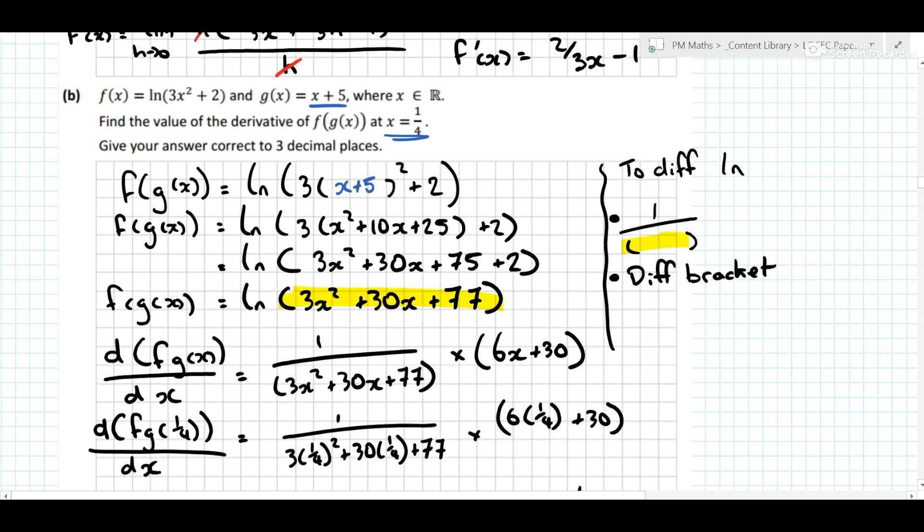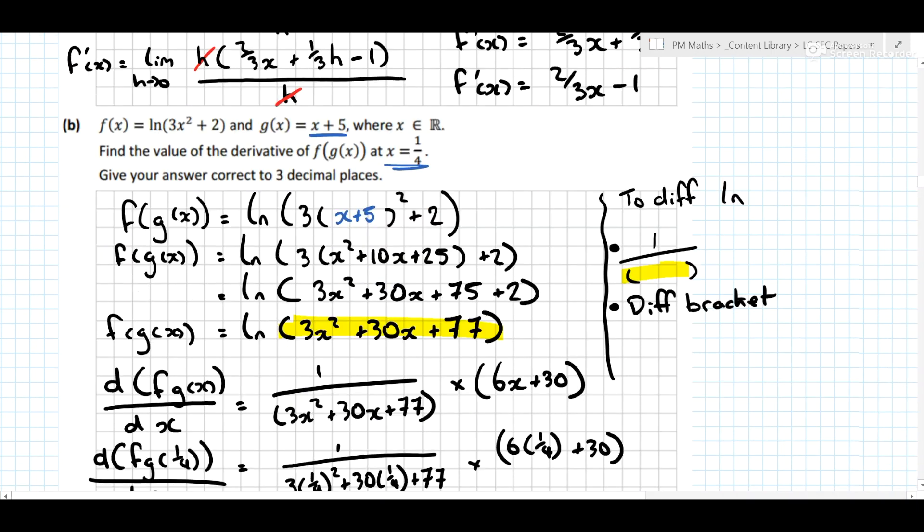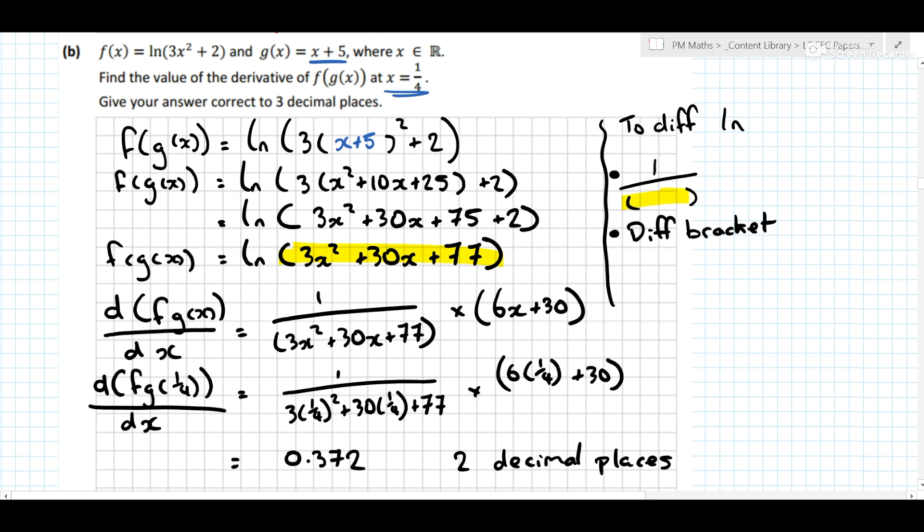Now, because the first question was so loaded, the second question is only a 5 mark question. Probably because it wasn't that well answered. 0, 3, 4, 5. But if you know your key steps, differentiation, to differentiate a natural log like that, the key points wasn't that bad, and actually quite a nice question as well.